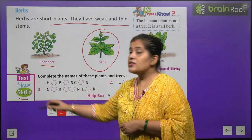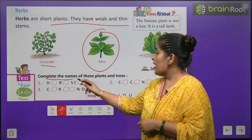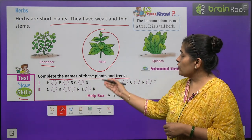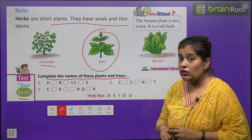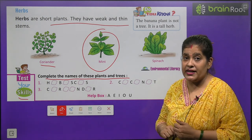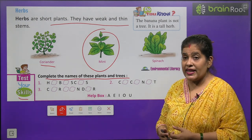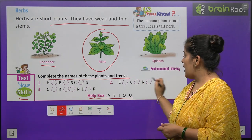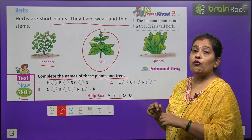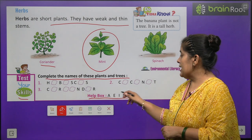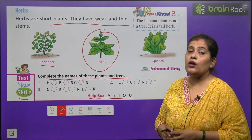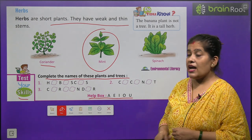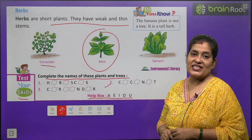Now test your skill. Complete the names of these plants and trees. Yahan par kuch plant aur trees ke naam diye hue hain, aapko unko complete karna hai. Sirf vowels ko bharke — A, E, I, O, U mein se koi ek word is box mein aayega. This exercise you will do by yourself.